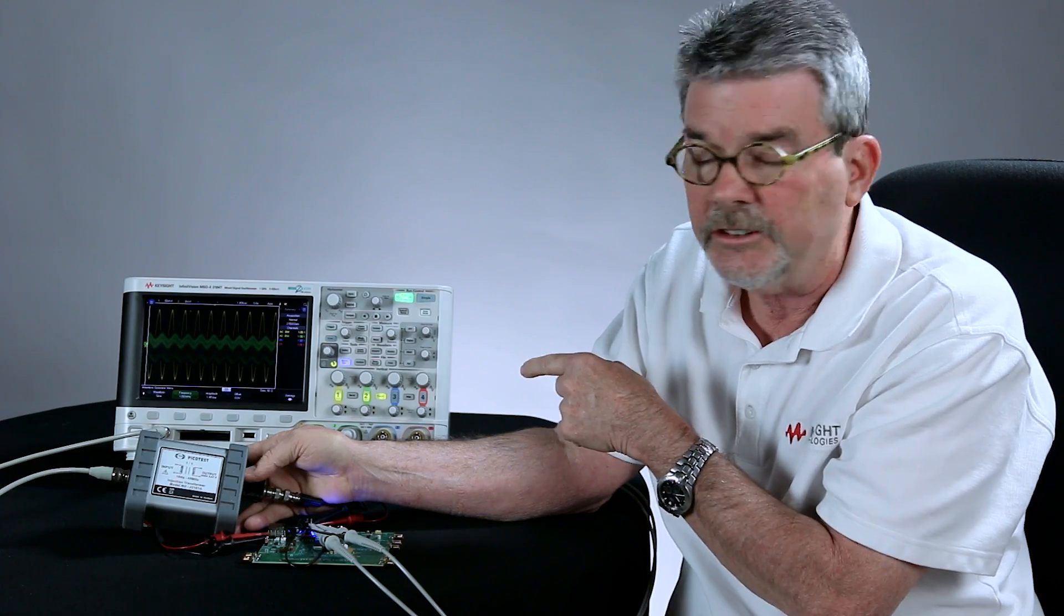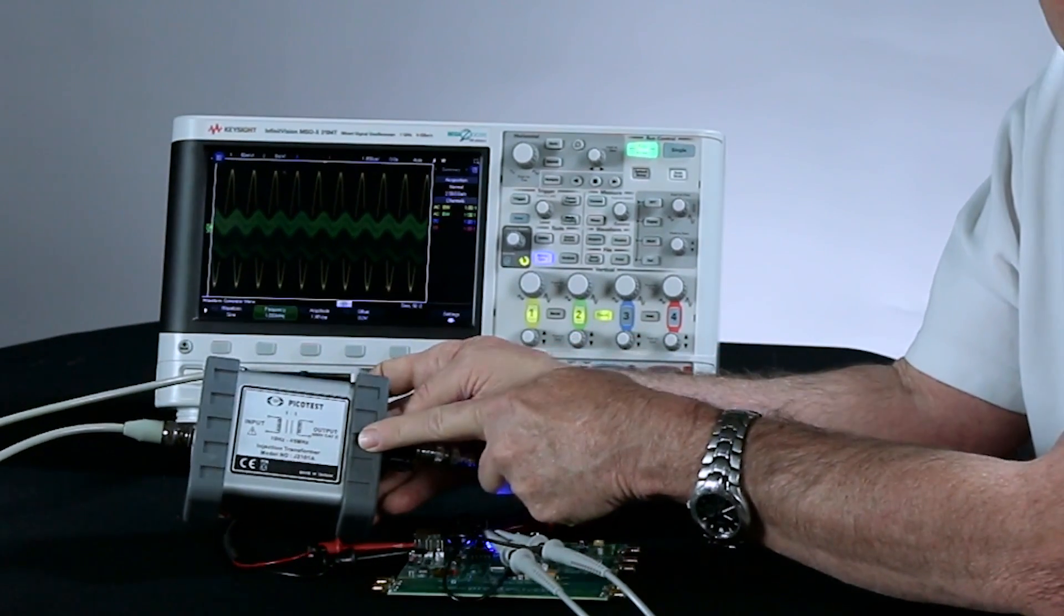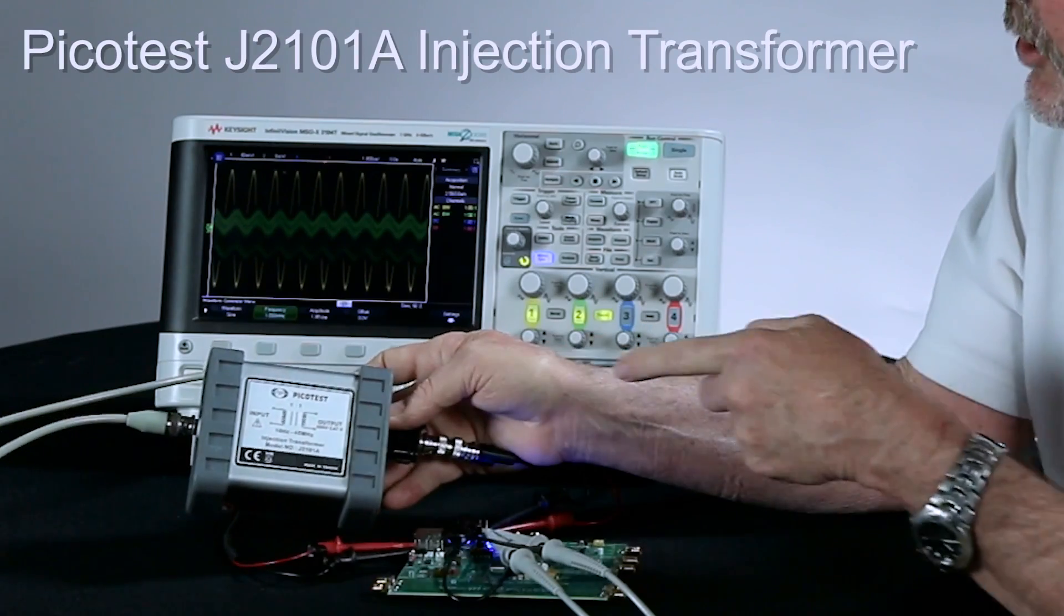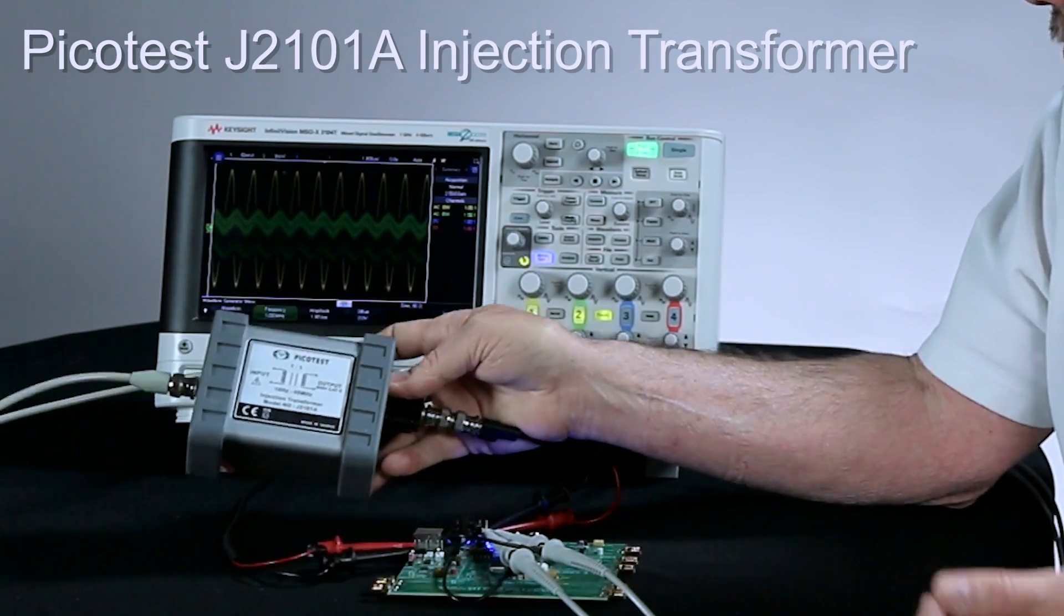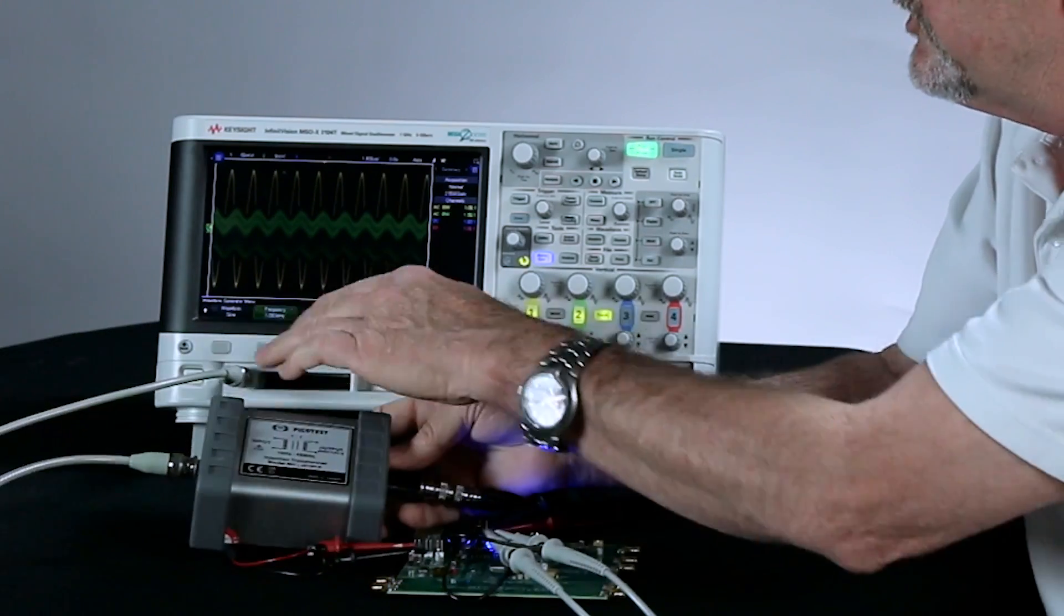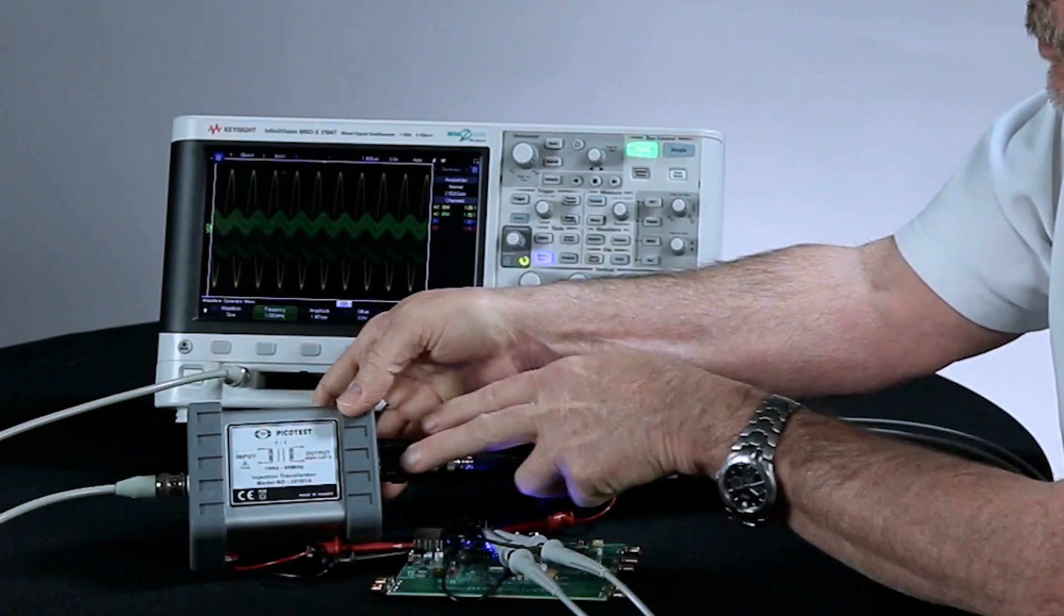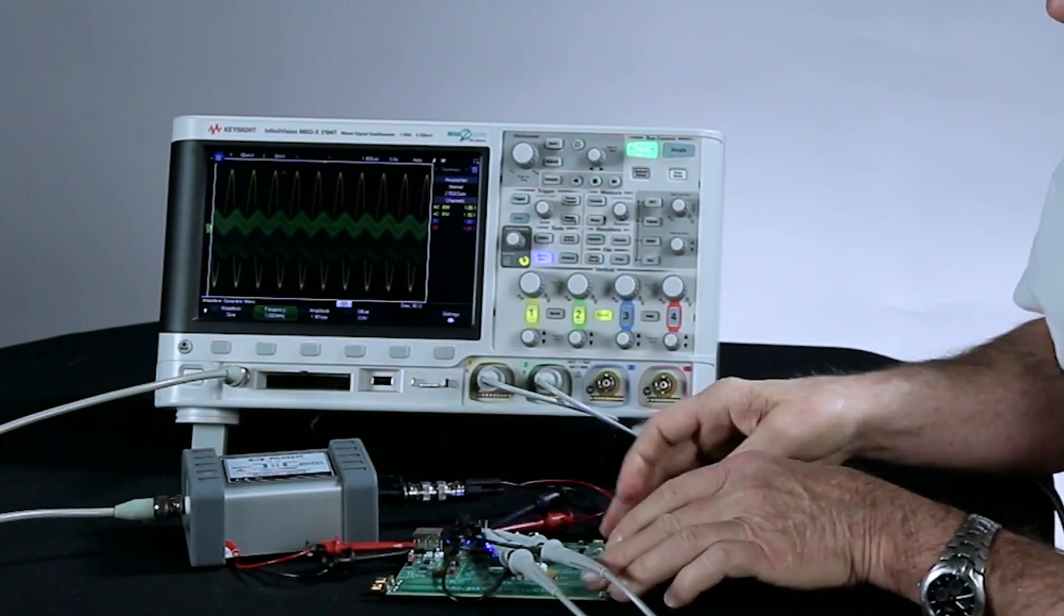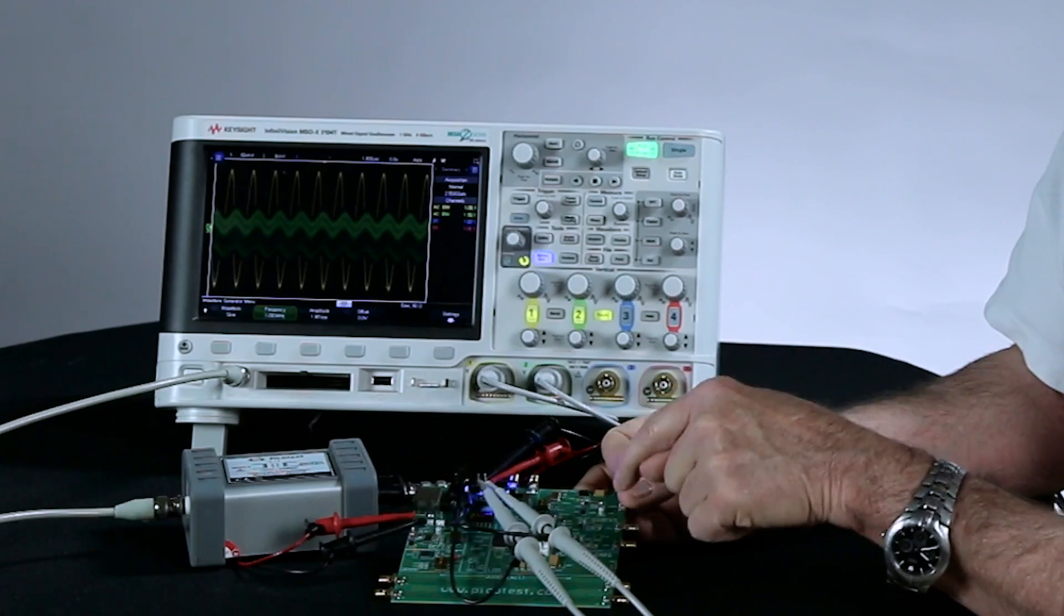The scope's generator is grounded. So we can do it with an isolation transformer. What I'm using is also from PicoTest is called the J2101 injection transformer. So what I have set up here is, first of all, you can see the BNC connected to the wavegen output.